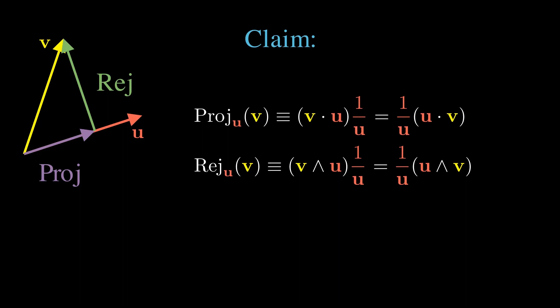For the multi-vector products in the rejection operator, order matters. The left ordering was found by expanding v equals v times u times u inverse. The right ordering was found by expanding v equals u inverse times u times v.